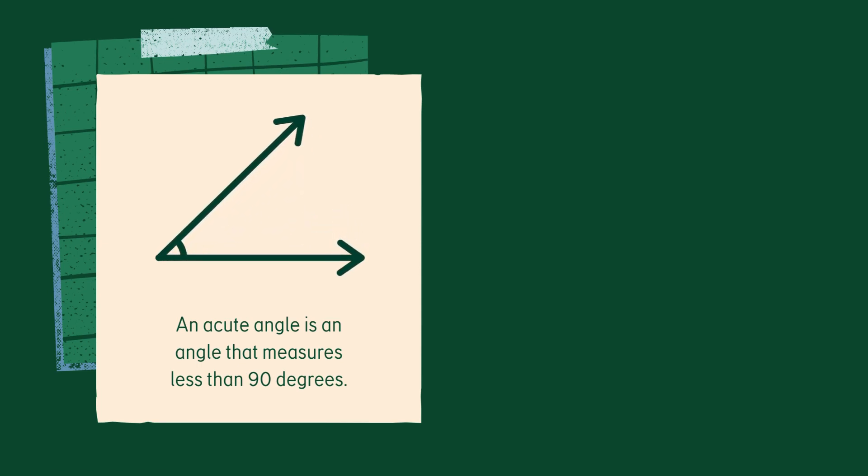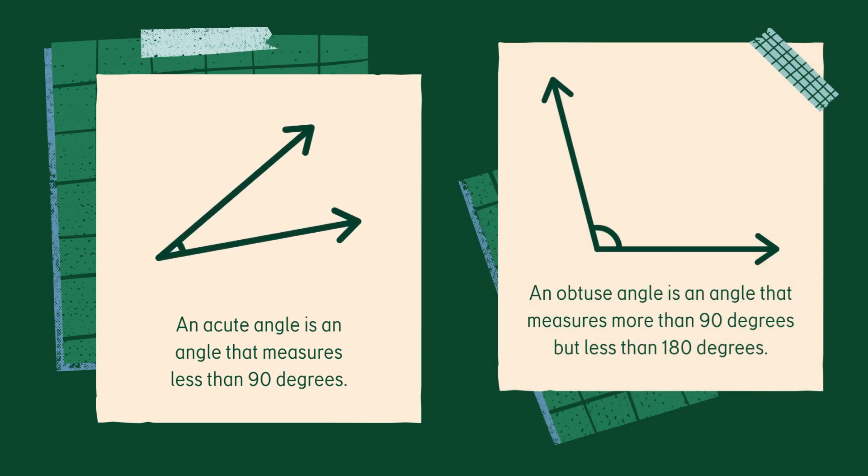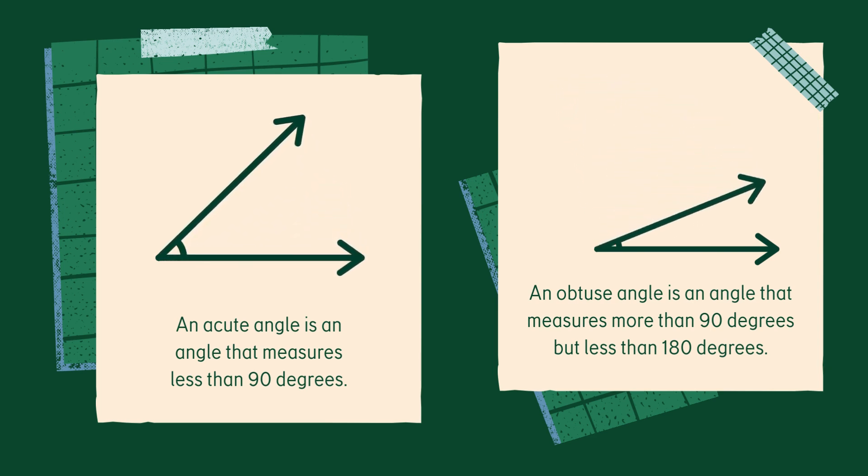An acute angle is an angle that measures less than 90 degrees. An obtuse angle is an angle that measures more than 90 degrees but less than 180 degrees.